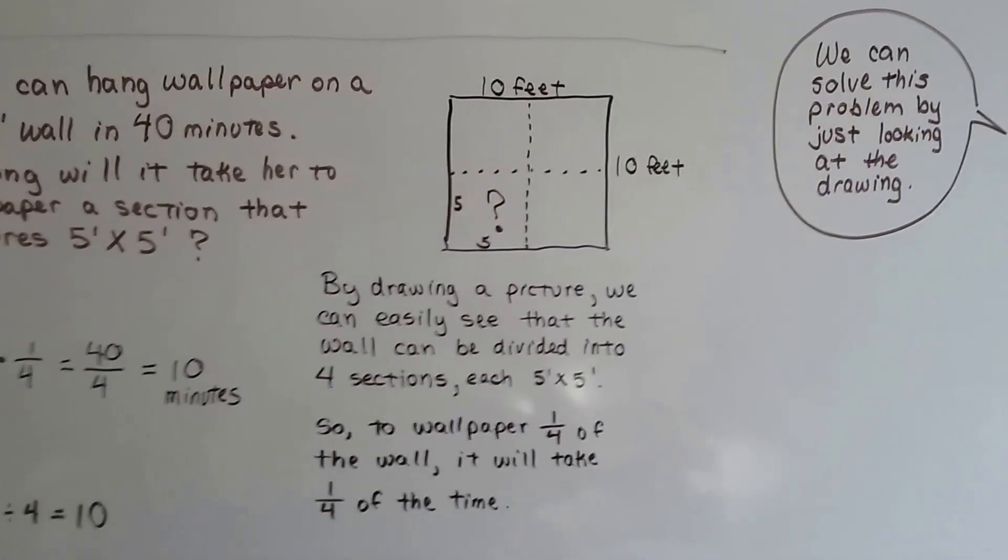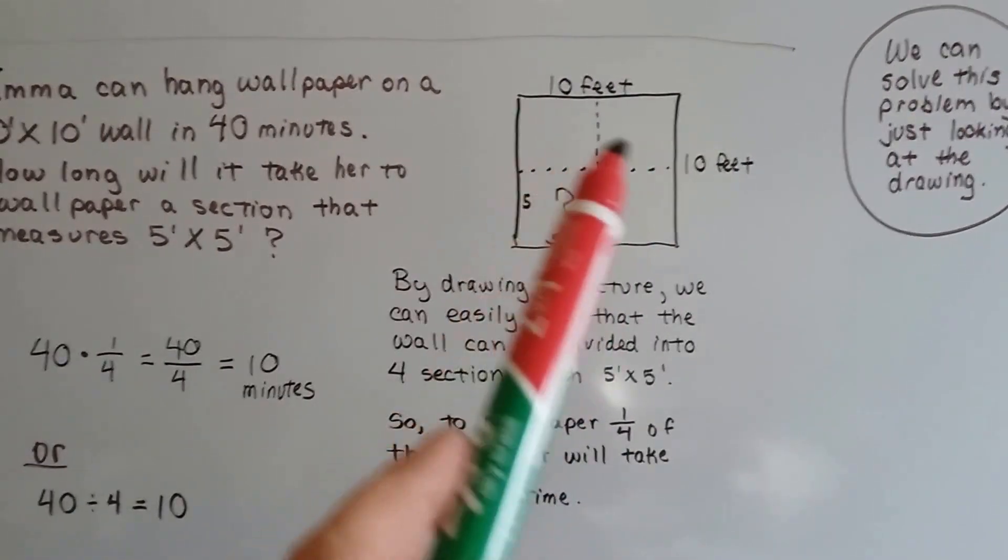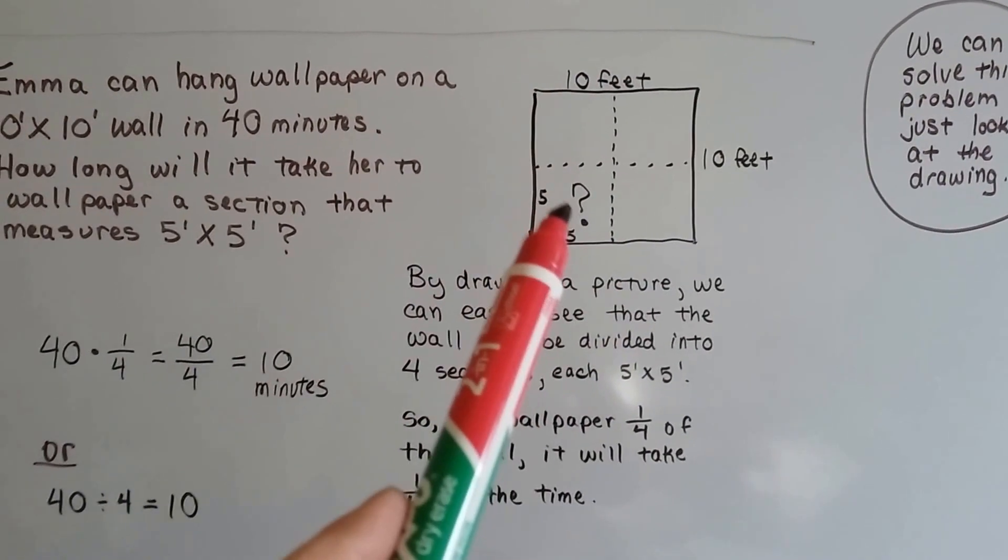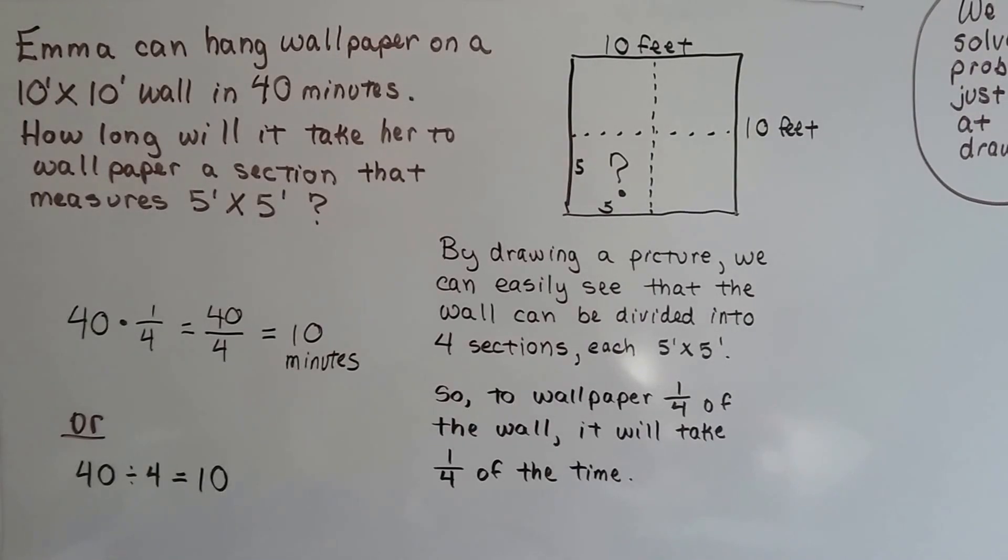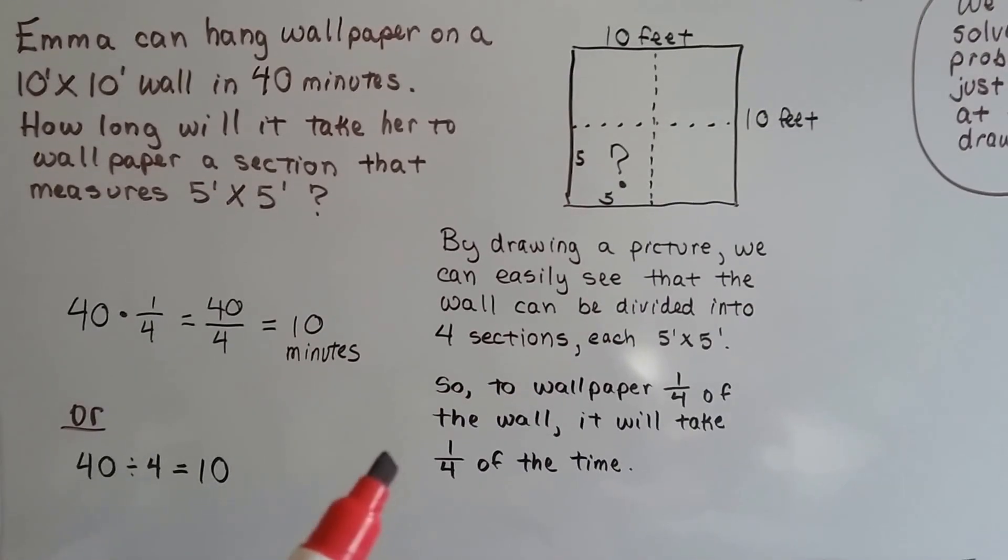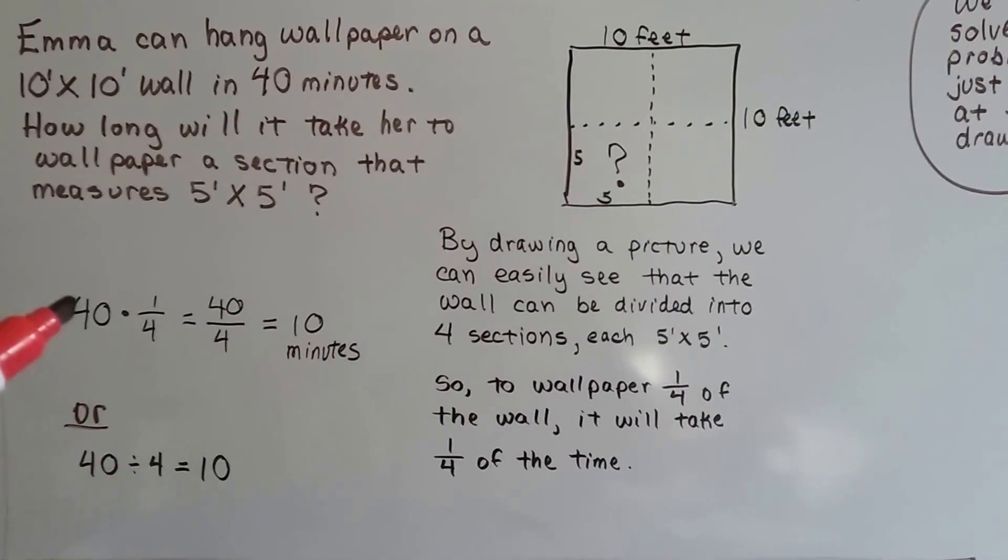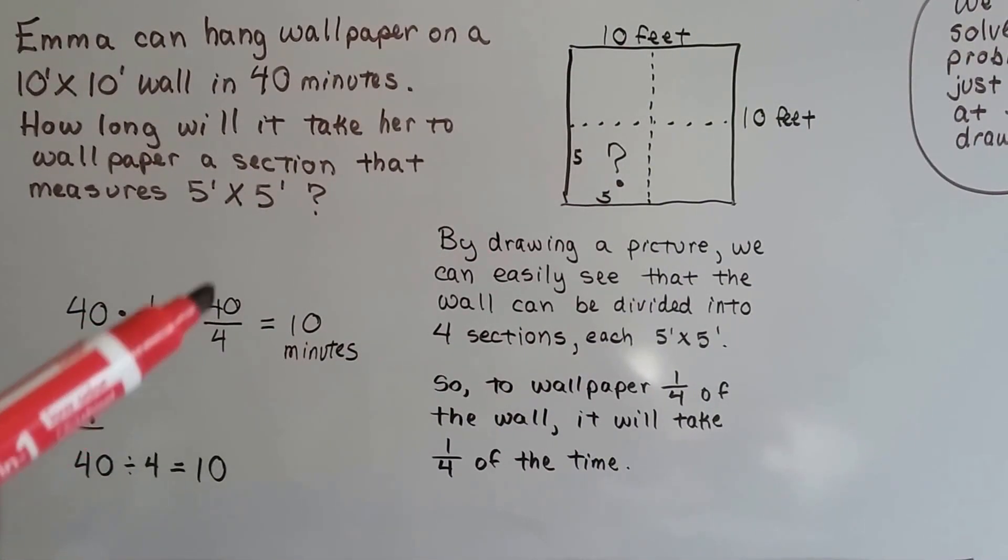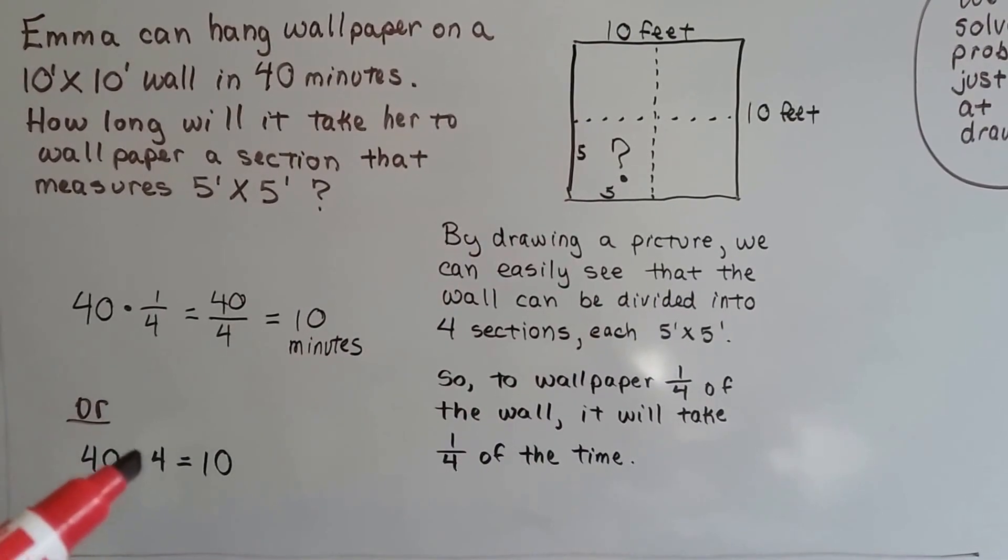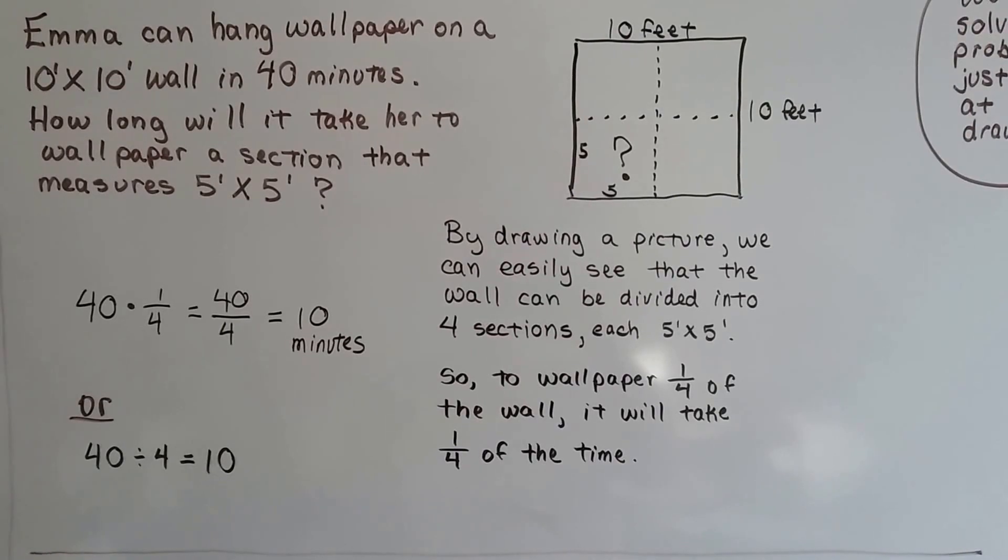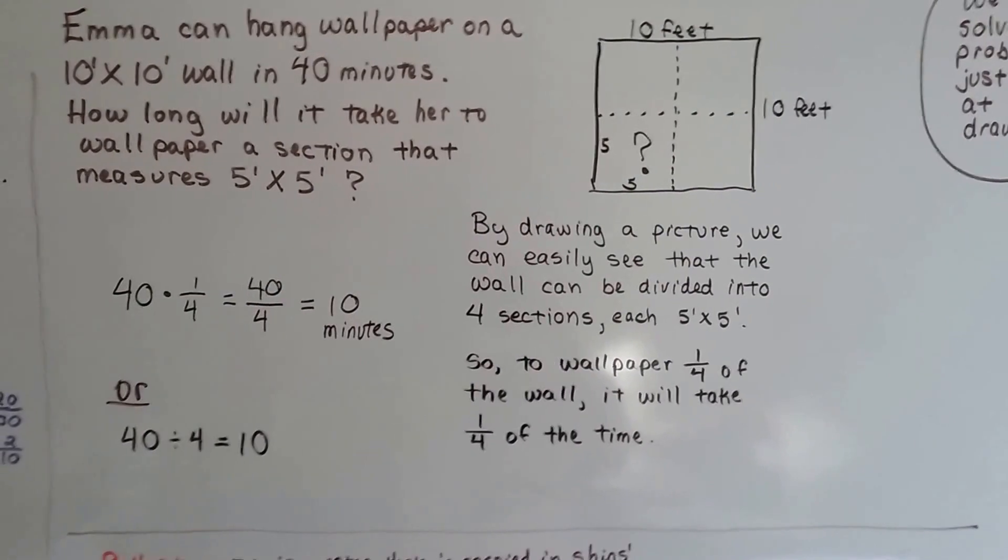Well, we can solve this problem just by looking at the drawing. If we think about it, if this whole thing takes 40 minutes, how much would 1 fourth of it take? And by drawing the picture, we can easily see that the wall is divided into 4 sections, each 5 by 5. So to wallpaper 1 fourth of the wall is going to take 1 fourth of the time. And 40 times 1 fourth equals 40 divided by 4 or 10 minutes. We could even say 40 minutes divided by 4 sections equals 10 minutes. It helps us visualize it.